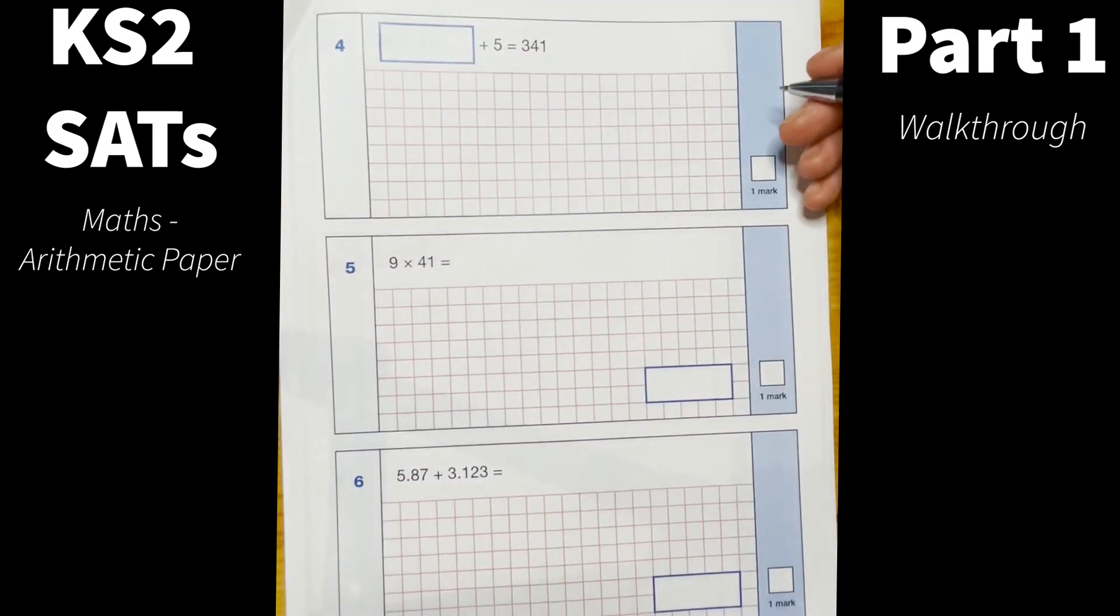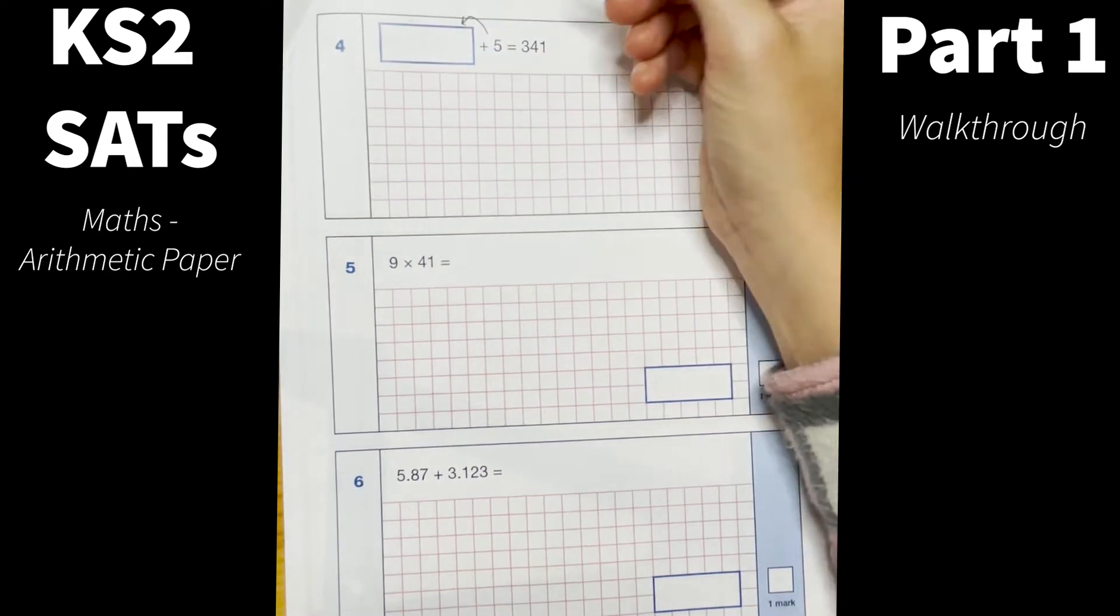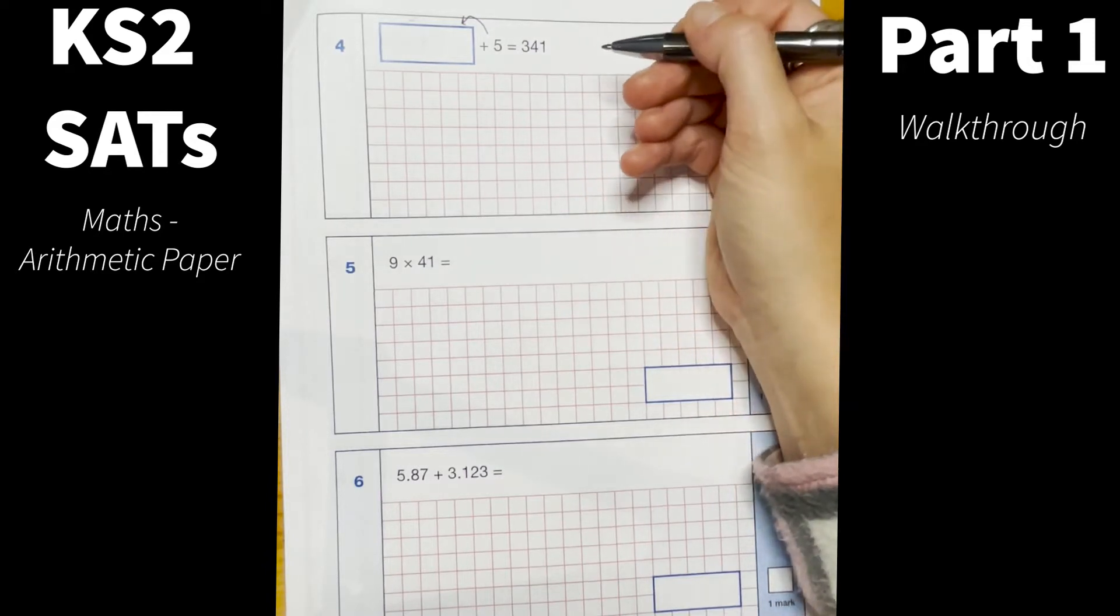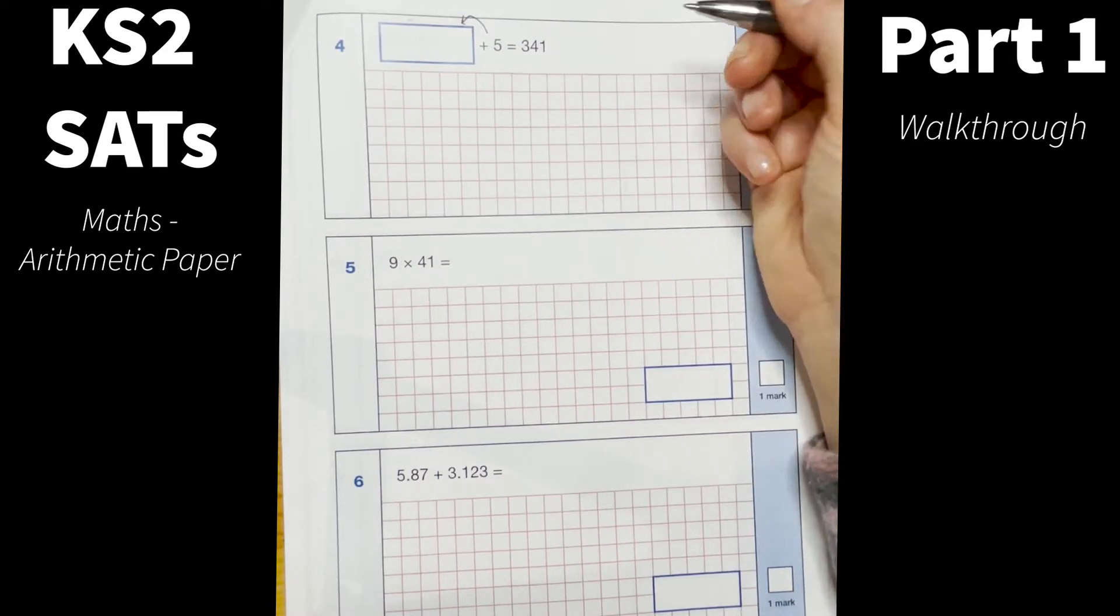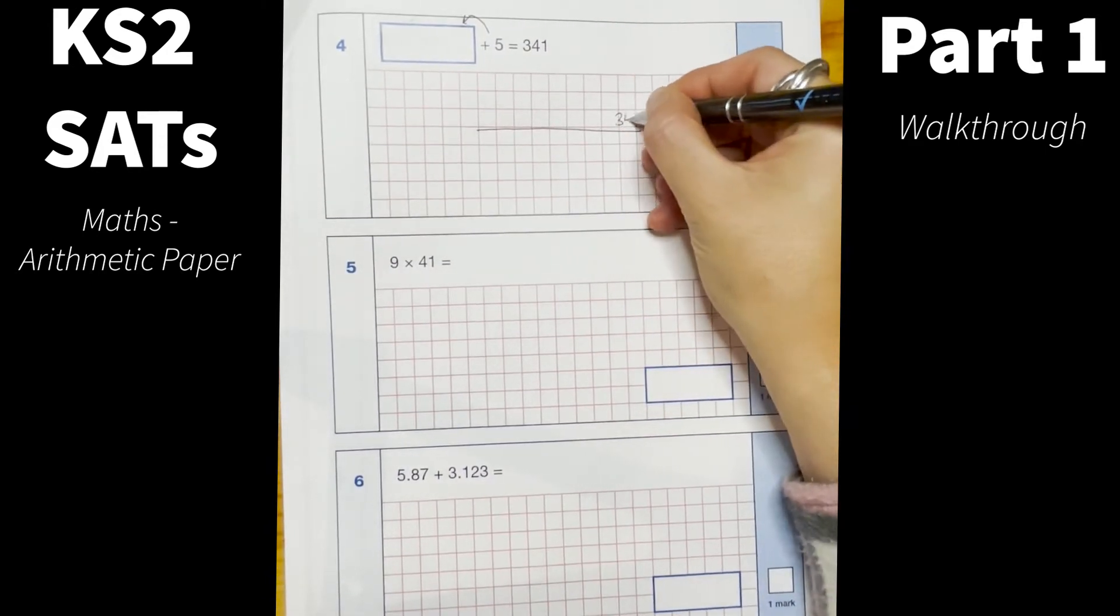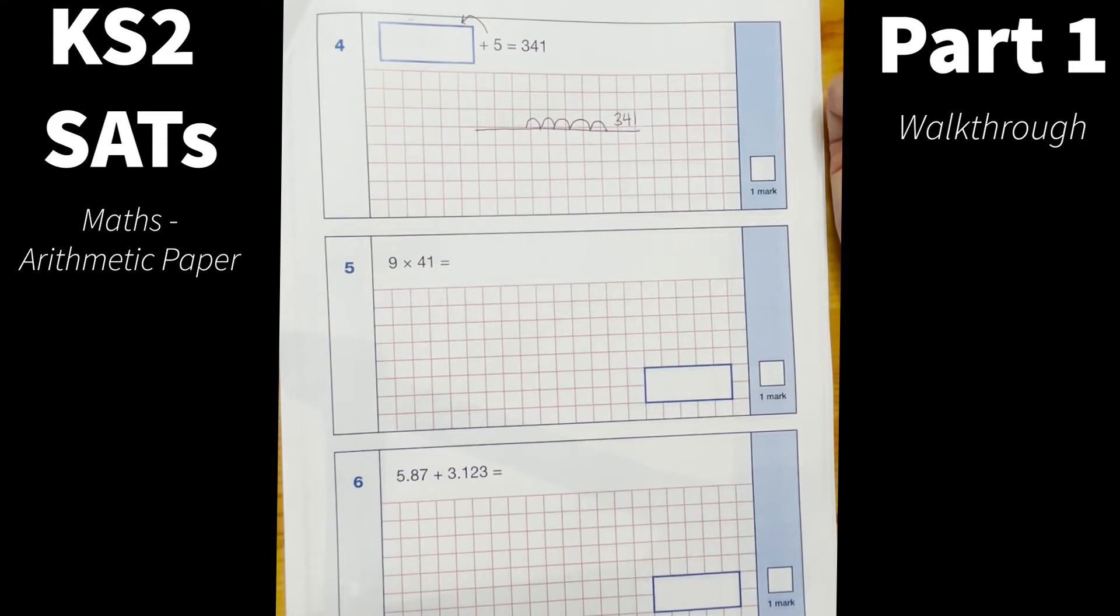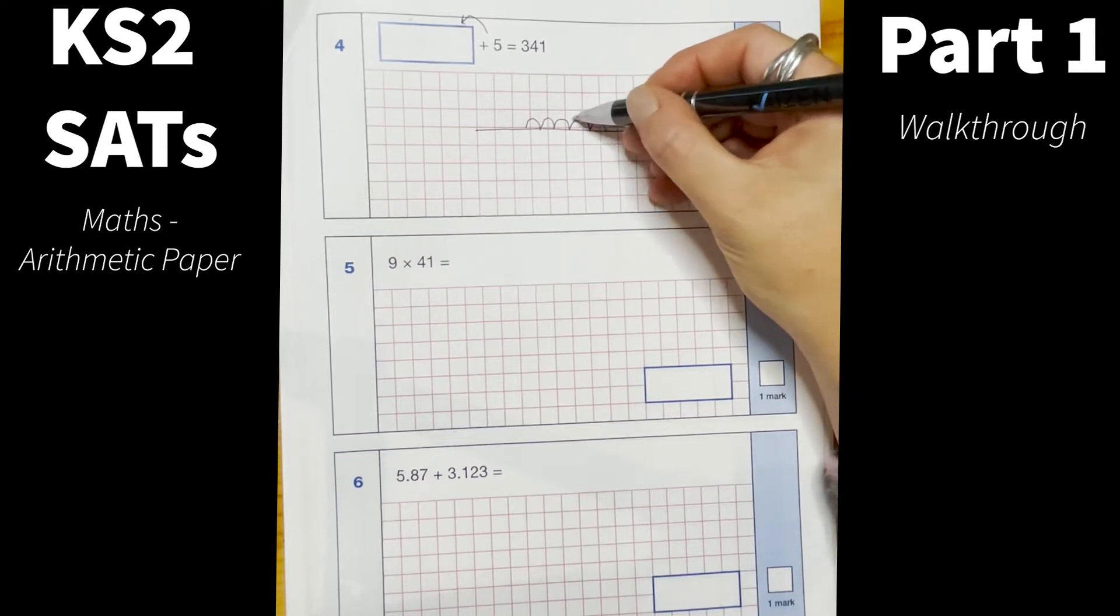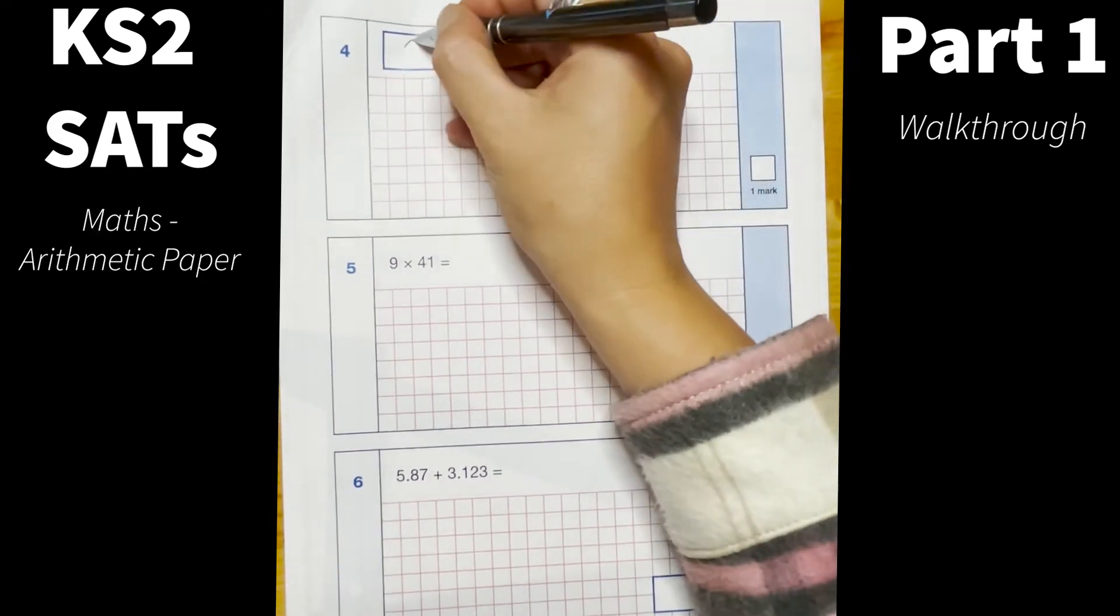Okay now we've got a missing number question here so the children will need to work out what this number in this box is. We know that something add 5 equals 341 so here the children would need to use the inverse to work out what that is, so they'd need to do 341 take away 5. They could possibly do that mentally or they can count back using any of those mental strategies, so they could draw a number line here and have 341 and count back 5. Or they could do the column subtraction but I think it's probably easier just to do it mentally, so 341, 340, 339, 338, 337, 336, so it's going to be 336.